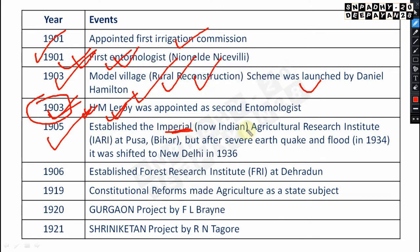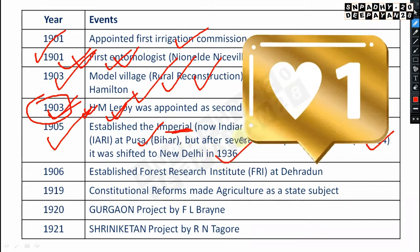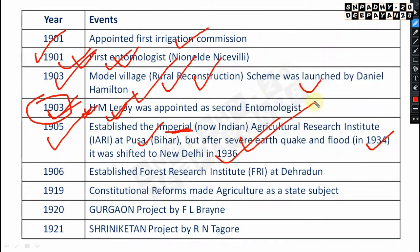IARI was established at Pusa, Bihar, but after an earthquake and flood in 1934, it was shifted to New Delhi in 1936. In 1906, the Forest Research Institute (FRI) was established — very very important. Its headquarter is at Dehradun. Please remember: FRI headquartered at Dehradun, established in 1906.